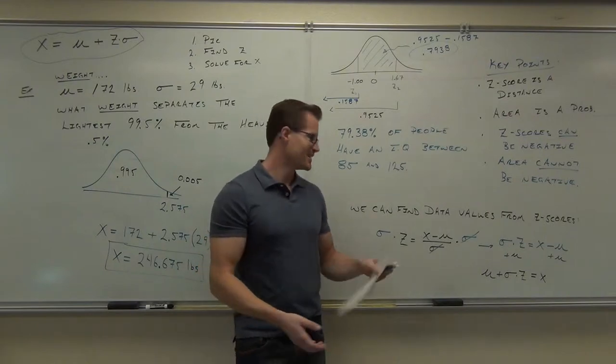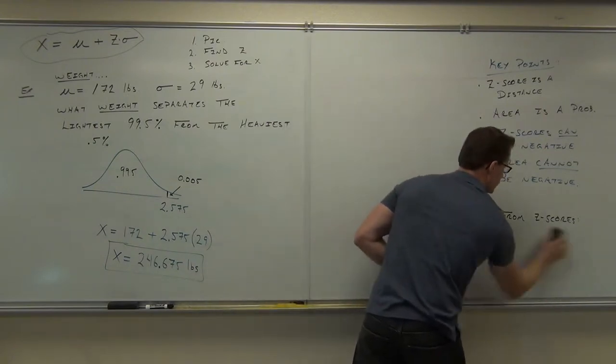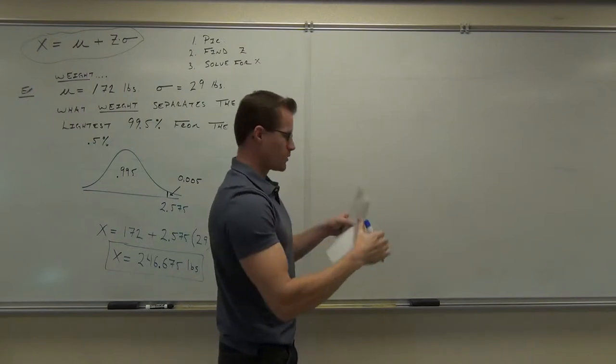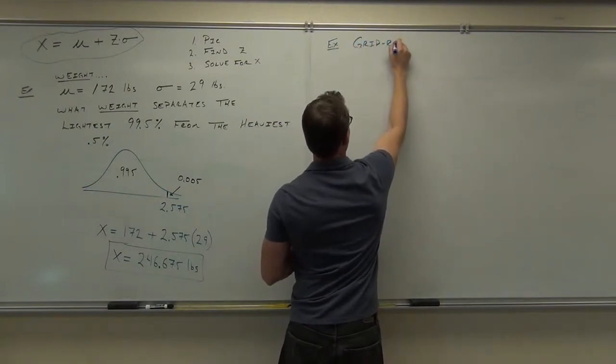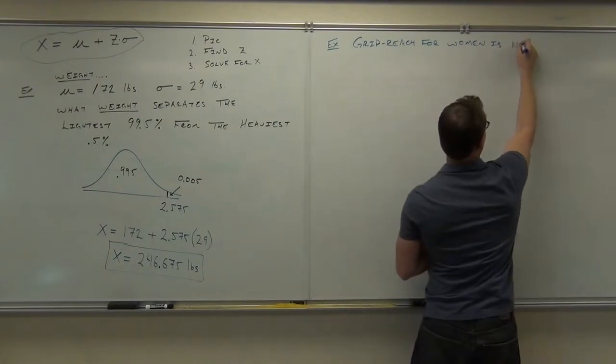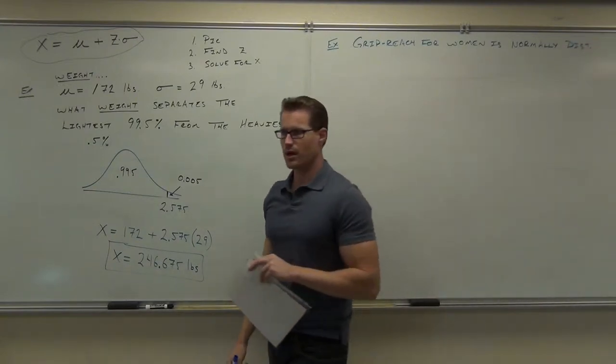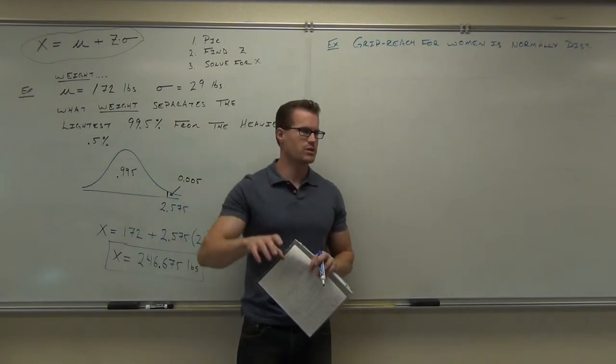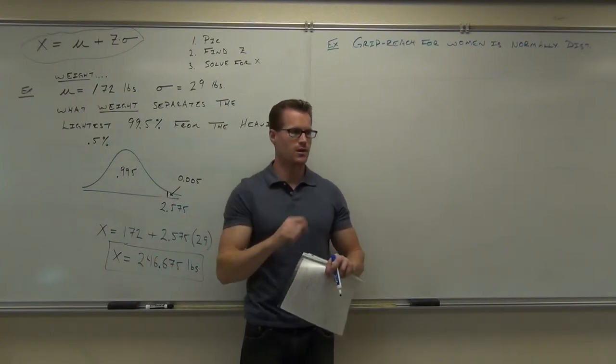Here's a car company. They did their own research and found out that if they take into account all the women in the United States, which is their market area, the grip reach for women is normally distributed. Is that an important statement? Absolutely, because otherwise you would not be able to translate this into a standard normal distribution. It's normally distributed and the mean grip reach is 27 inches. That means a woman should be able to reach 27 inches and touch something or grab onto something without having to lean. So from her car she should be able to go and touch something on average.